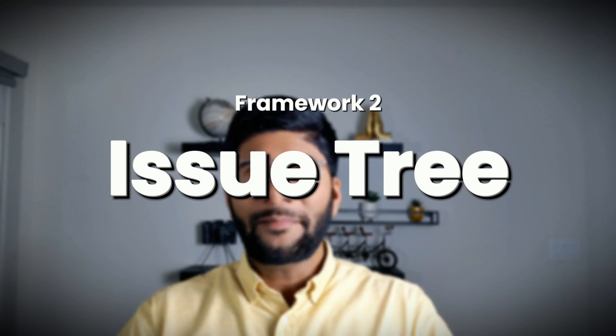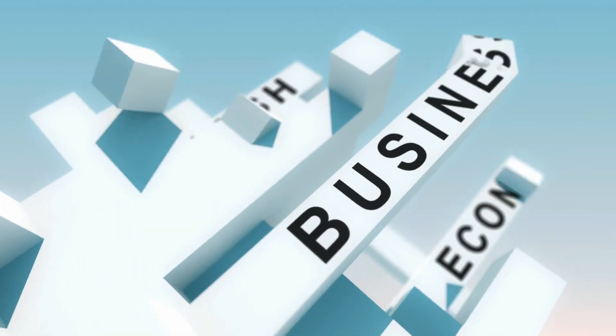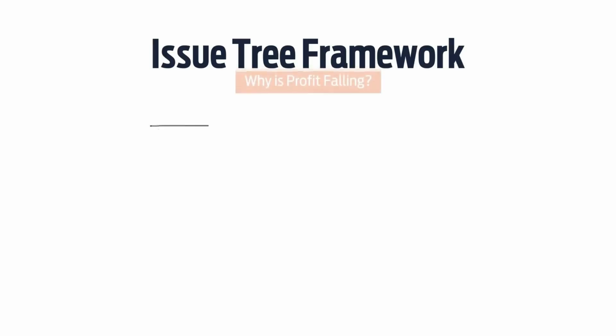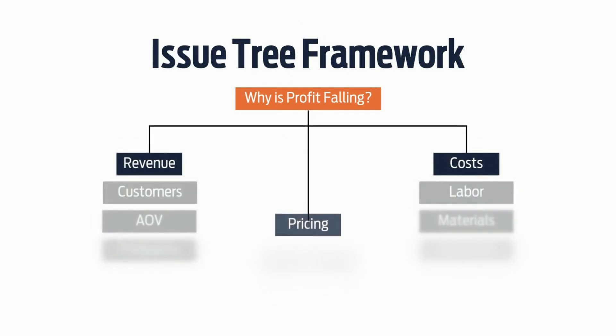The second framework is called the Issue Tree. Now that you are thinking in a structured manner, the issue tree breaks big, messy problems into bite-sized steps. Let's say a stakeholder tells you that profits are down — you branch out to identify different issues. You branch into three different issues: revenue, cost, or pricing.